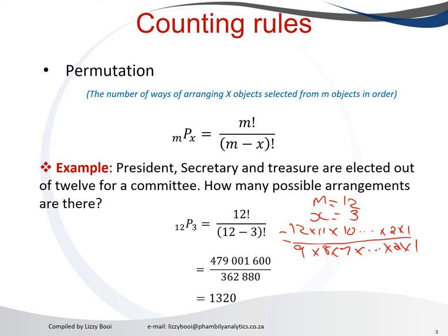And that will give you 1,320 ways of selecting those three positions. There are 1,320 ways of selecting a president, a secretary, and a treasurer.